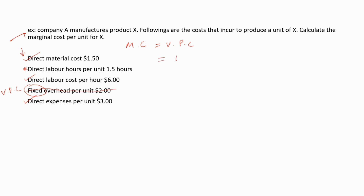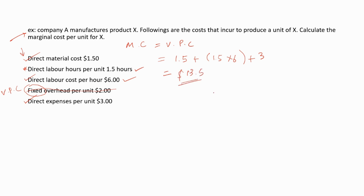Now we can calculate the marginal cost per unit. This is equal to 1.5 plus (1.5 multiplied by 6) — this is the direct labor cost per unit, since 1.5 hours are taken to produce one unit at $6 per hour — plus 3. This equals $13.50. This is the marginal cost per unit.